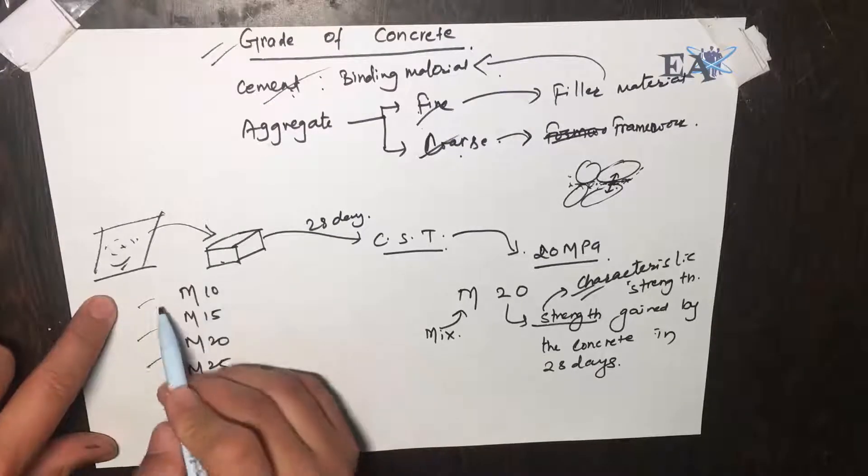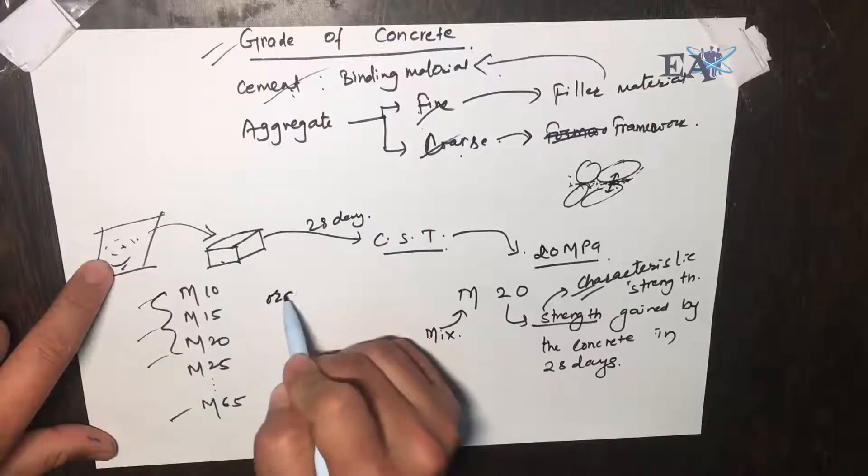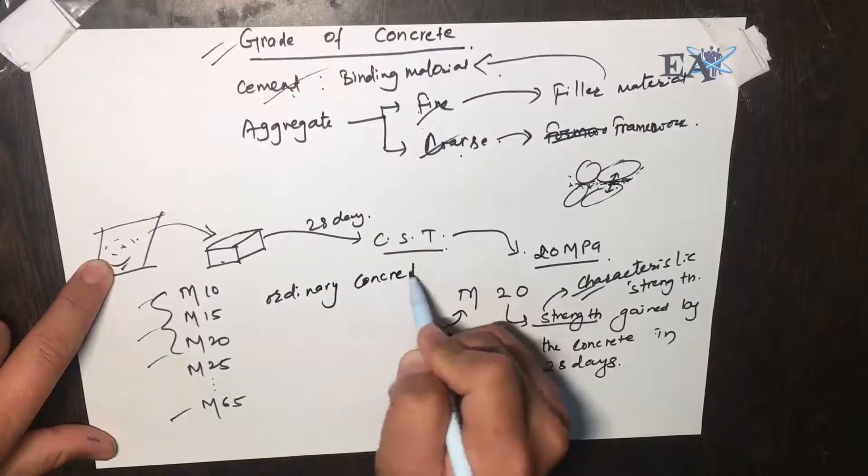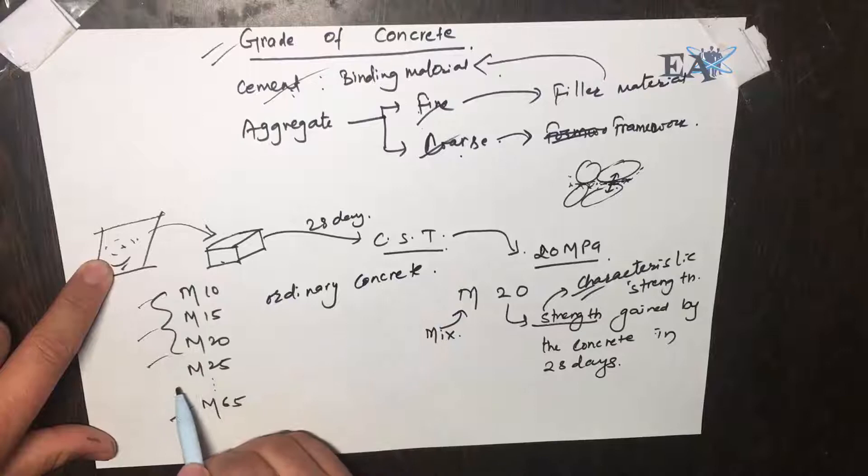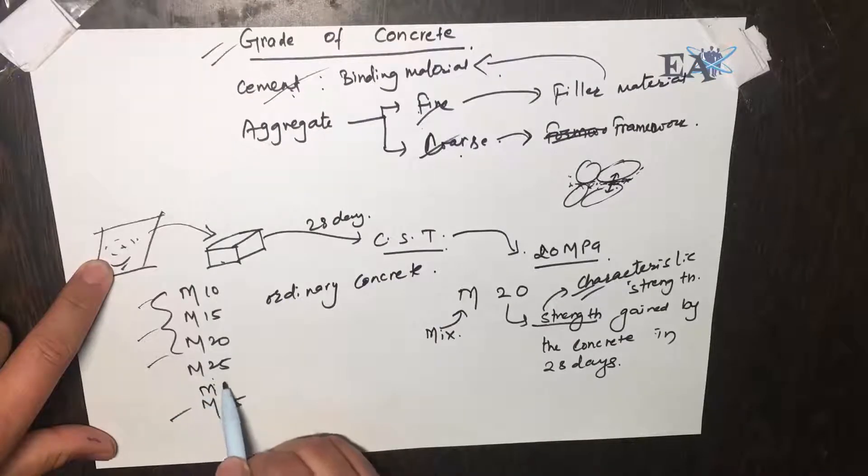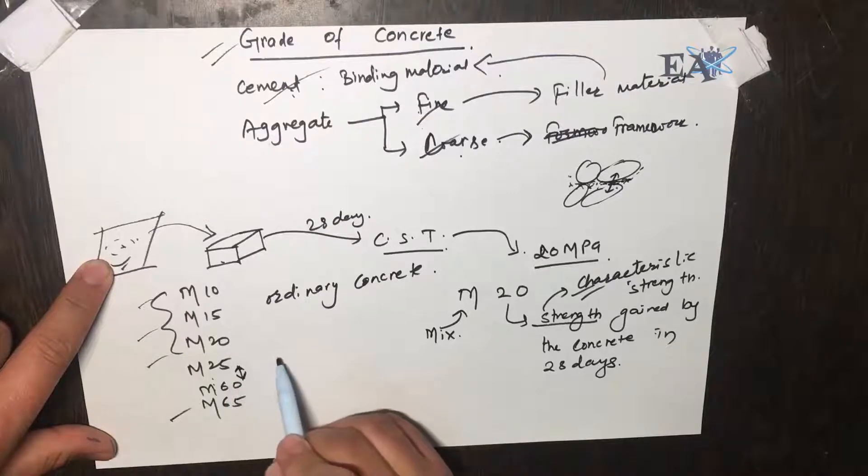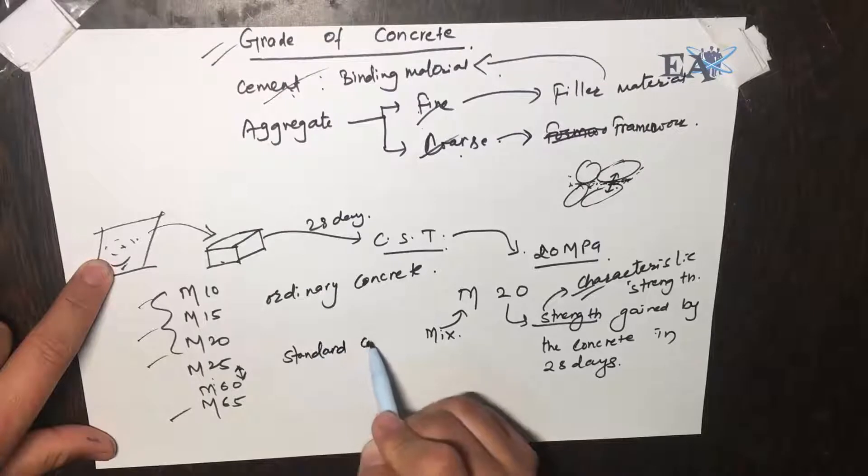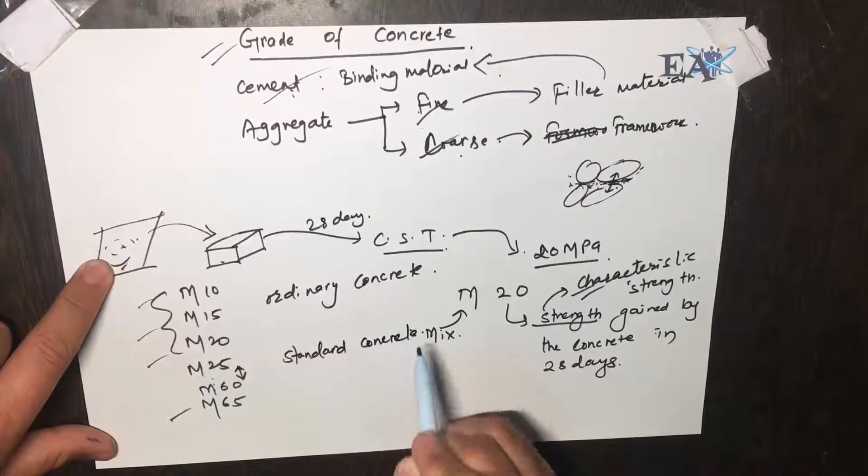M10, M15, and M20 are called ordinary concrete. M25 to M60 are called standard concrete, and from M65 and above they're called high strength concrete.